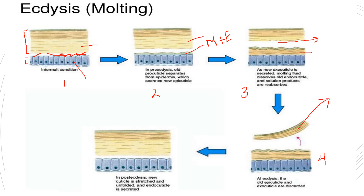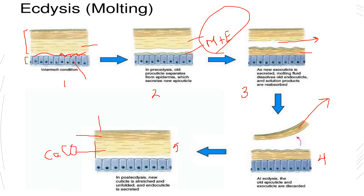In the fourth step, there is removal of the previous exoskeleton and complete formation of a new exoskeleton. Moving to the fifth step: a complete endocuticle, exocuticle, and epicuticle have formed — all due to the molting gel and ecdysone enzyme. The endocuticle layer is very thick, and this thickness is due to the deposition of calcium carbonate. This calcium carbonate makes the skeleton strong enough to protect the insect or arthropod from predators.